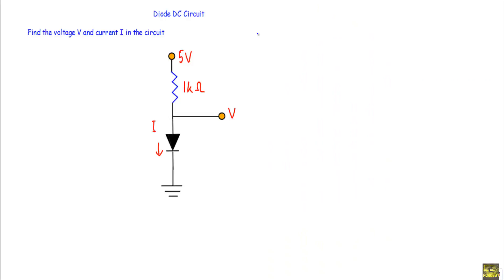In this video I will show you two examples of diode DC circuits. This is the first example: find the voltage V and current I in the circuit. This is our circuit in which we have applied a 5 volt voltage at this terminal and we have to calculate the voltage across the diode D and the current flowing through it.